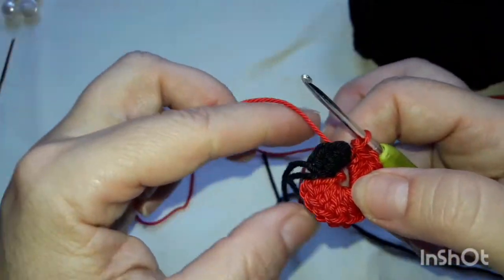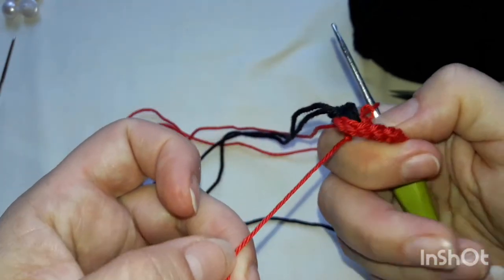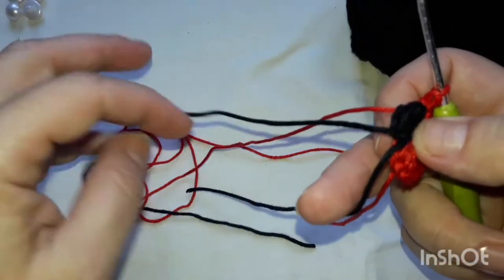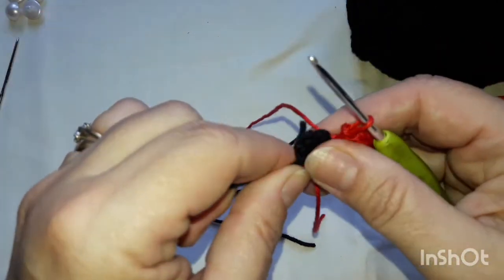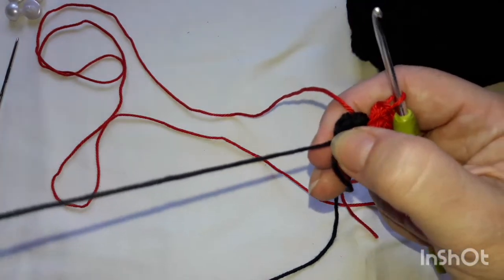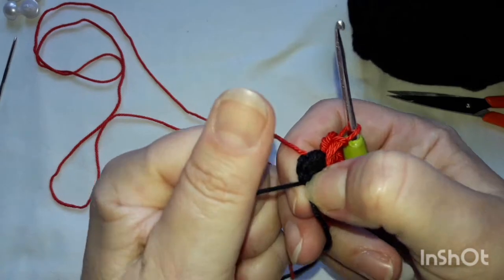Okay, so what you're going to have is you're going to have the tail from when you started the 12 double crochets, the tail from the ring itself which you can pull tight, and then a long tail from when we finished the abdomen. Pull that tight as well.